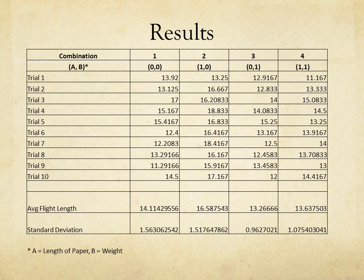These are the results of our experiment. Each column represents a separate airplane. The (0,0) column was the 9-inch airplane with no penny — it had an average flight length of 14.1 feet. The (1,0) airplane was the 11-inch airplane with no penny, with an average flight length of 16.58 feet, the longest of our flight lengths. The (0,1) airplane was the 9-inch airplane weighted with a penny, with a flight length of 13.26 feet. The (1,1) column was the 11-inch airplane weighted with a penny, with a flight length of 13.6 feet.